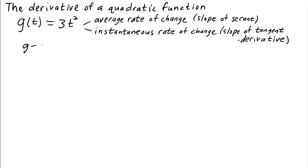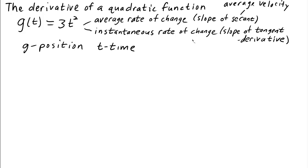If we think of g as being some position — for example, the distance an object falling has dropped — and t as time, then the slope of the secant, or average rate of change, is average velocity. And the instantaneous rate of change will be the velocity at a particular point in time.